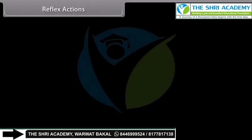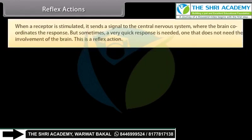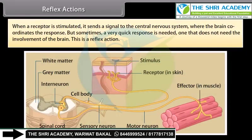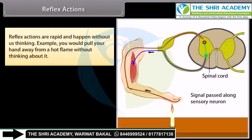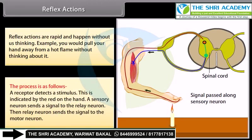When a receptor is stimulated, it sends a signal to the central nervous system, where the brain coordinates the response. But sometimes a very quick response is needed — one that does not need the involvement of the brain. This is called a reflex action. Reflex actions are rapid and happen without us thinking. For example, you would pull your hand away from a hot flame without thinking about it.